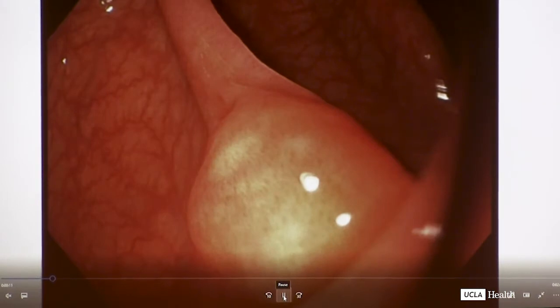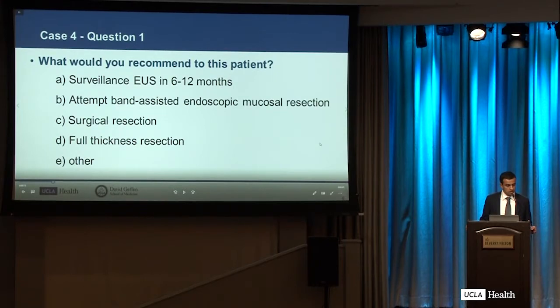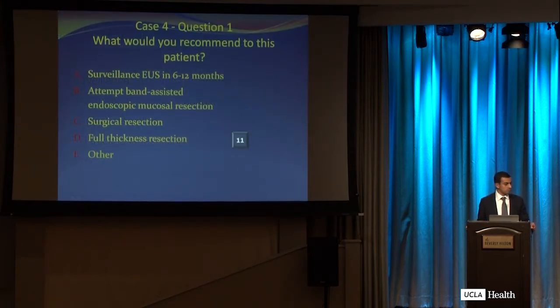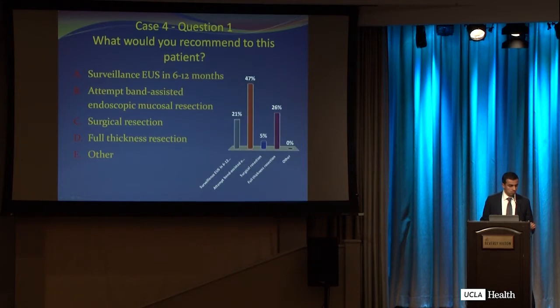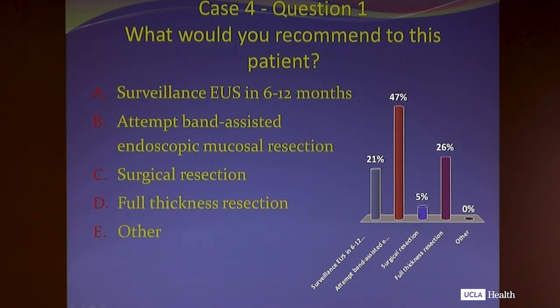What would you recommend for this patient? Eight millimeters, fourth-layer lesion — the concern is a GIST. About a fifth of people would watch with surveillance, some would do band-assisted EMR, some surgical resection, some full thickness resection, and about the same amount would do EUS. Panel members, what would you do? Dr. Roth: I certainly would not do an advanced assisted endoscopic mucosal resection — it's a mucosal resection, and this is right off of the muscularis propria. I think I'd do a full thickness resection using an Ovesco-type device. But having retired, I would call you.